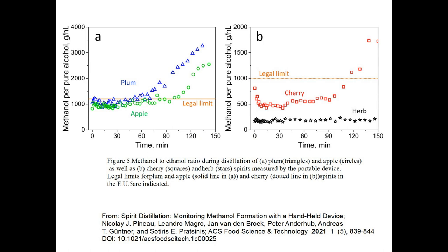Commercial distillers know this. They do not throw away foreshots because they know that to do so makes no difference to the methanol content of the product. They know that cuts are taken to control taste and they recycle foreshots with heads and everything else.